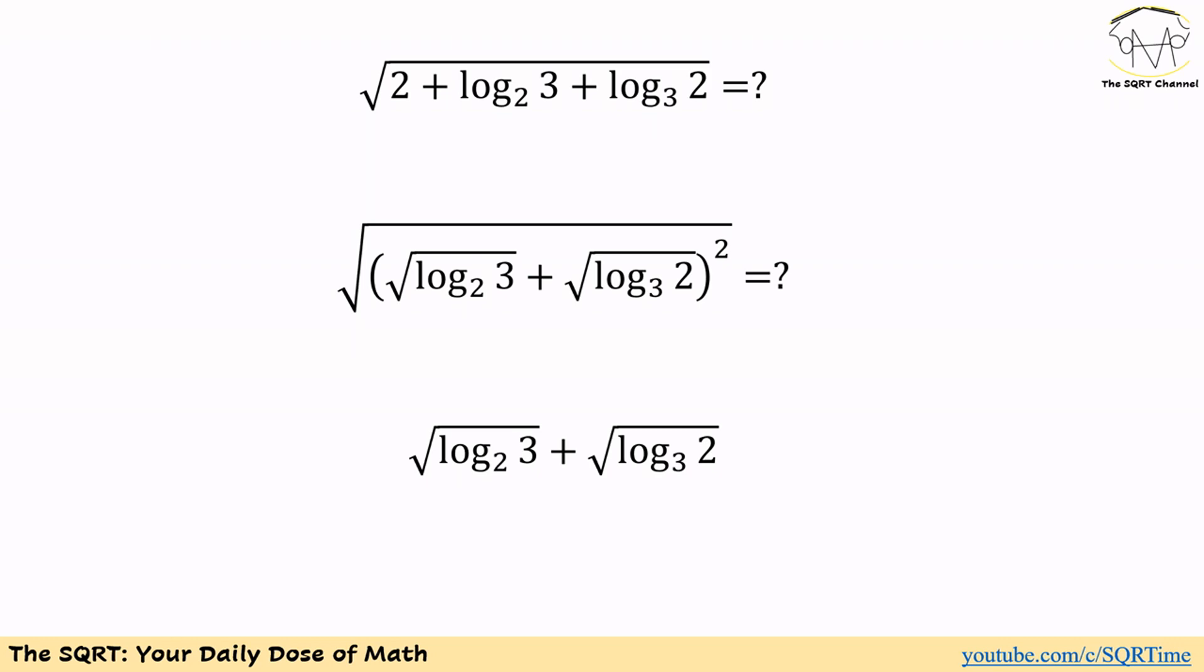If we multiply this log of 3 in base 2 and log of 2 in base 3, we can remove everything and just write it as one. They are inverse of each other, so we are going to use this property.